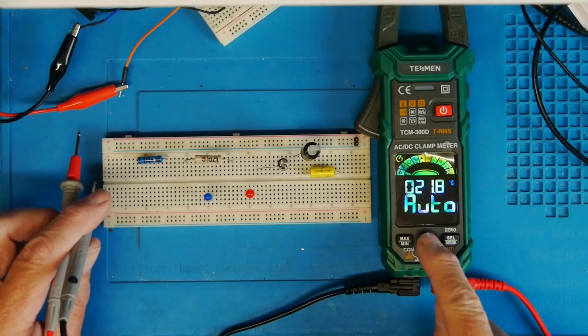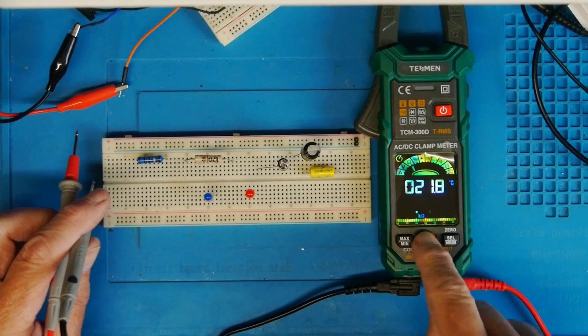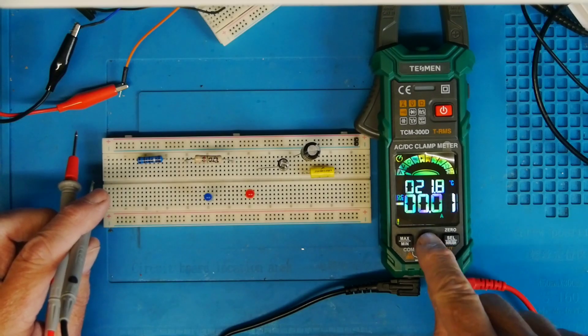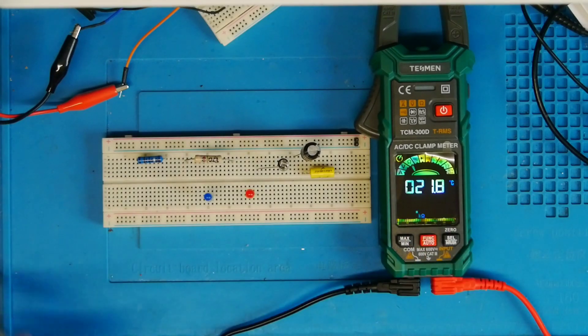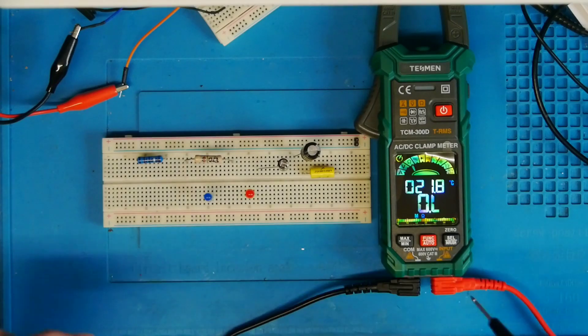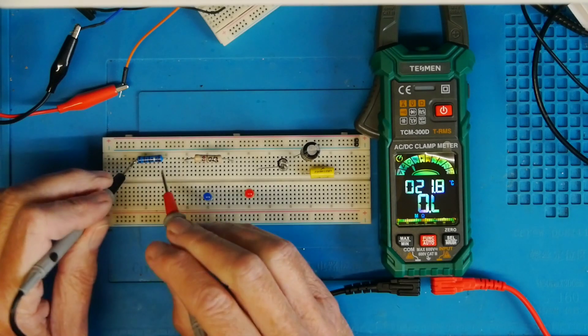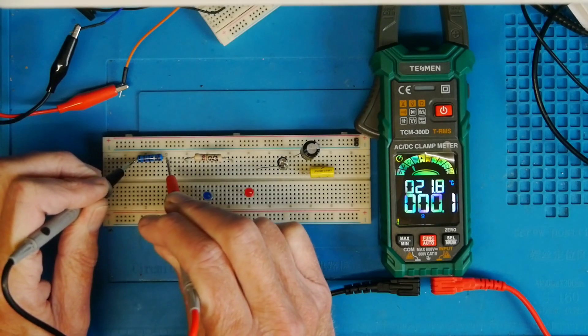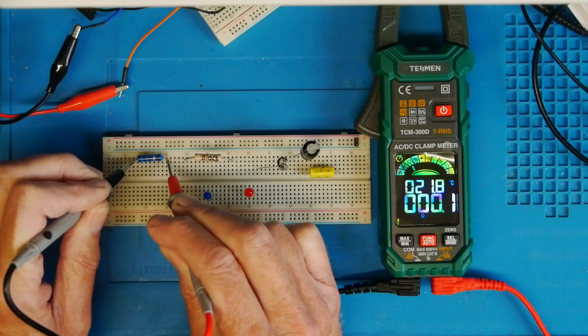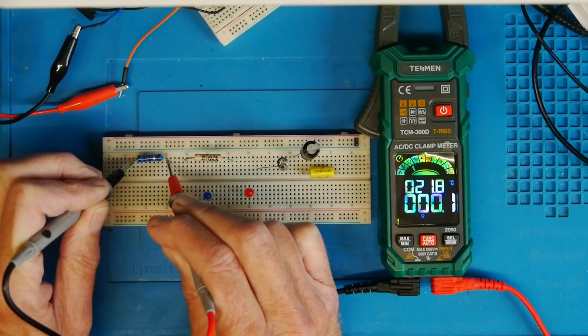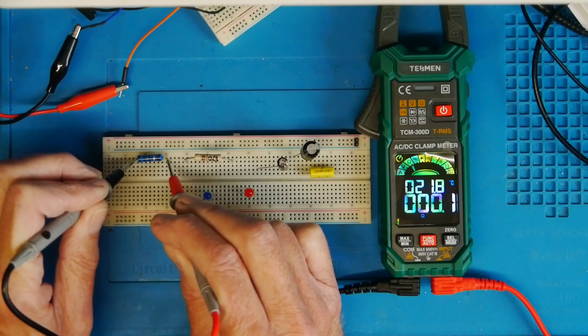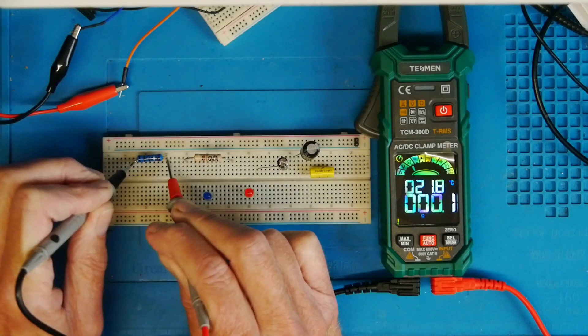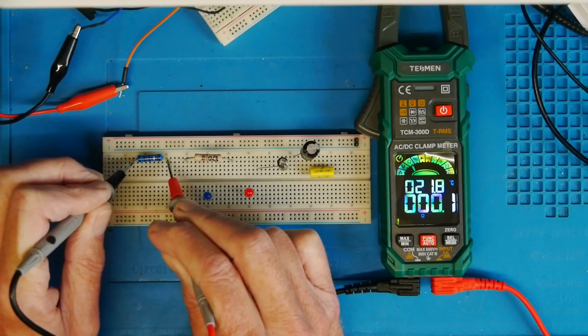So what you can do - we're in auto, but you can use the function button. If I step through to amps, volts, ohms, it's now not in smart mode, it's still auto-ranging. And if I now pop leads onto that resistor, it's saying 0.1 ohms, which is correct. I think that's pretty good for a meter like that, 0.1 to 8.8 megaohms. Resistance, absolutely fine.